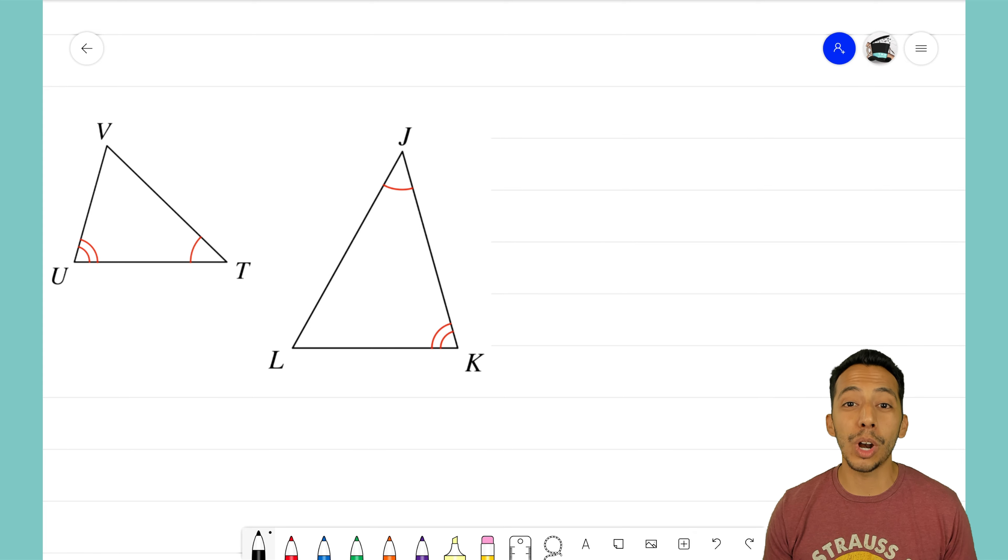Let's dive into this example where I have two separate triangles: triangle VUT and triangle JLK. We want to prove, are these triangles similar? With Angle-Angle similarity, all we have to find are two matching angles. If we can see two matching angles in these triangles, then we know for sure that these triangles are similar.